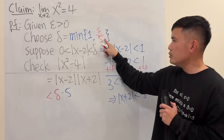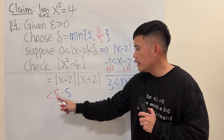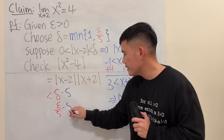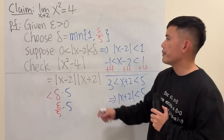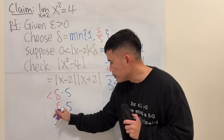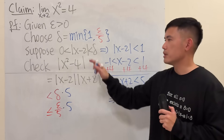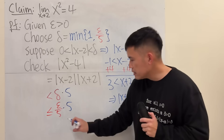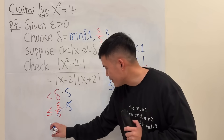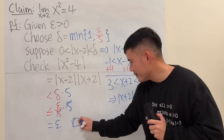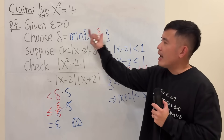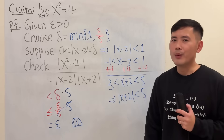Plugging delta equals epsilon over 5 back in, and because delta is the minimum of 1 and epsilon over 5, we use less than or equal to. Then 5 and 5 cancel, and we end up with just epsilon. Done. Now, why do we do this and how do we know to do this? As I said, we did it because it makes everything easier. But when you first see it, you won't accept it — this step feels out of nowhere. When I was a student, this confused me a lot as well.